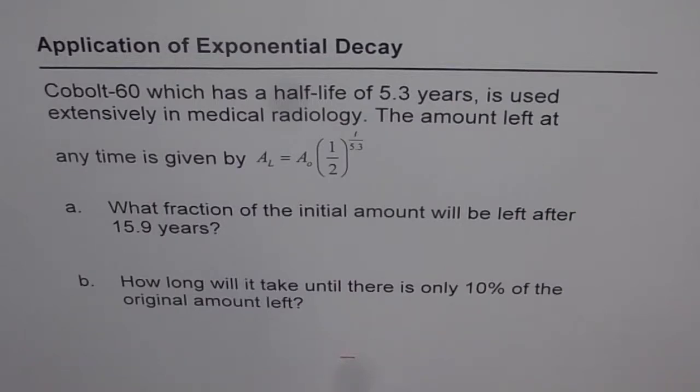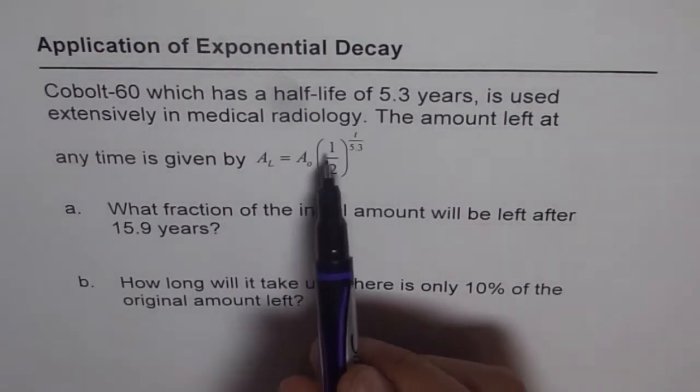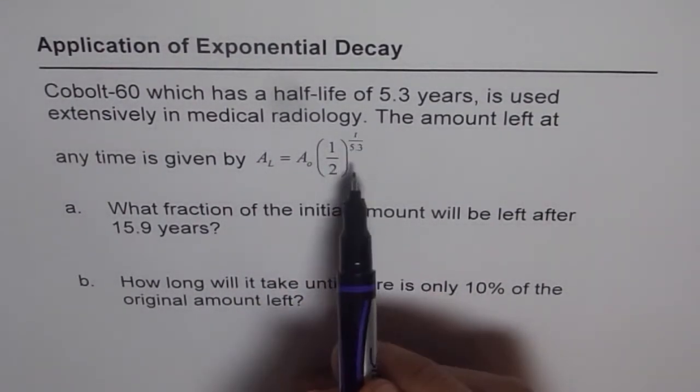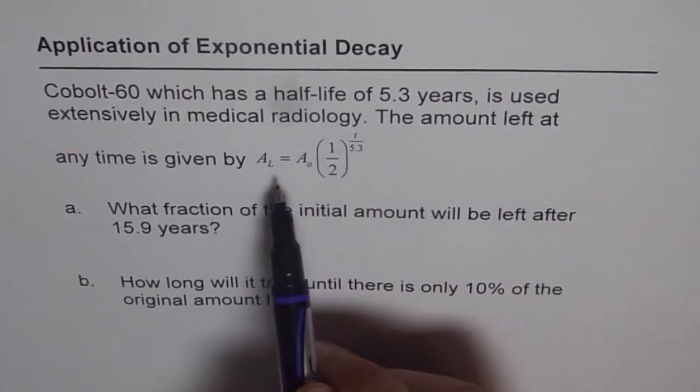The amount left at any time is given by A_L = A_0 × (1/2)^(T/5.3), where A_0 is the initial amount, T is the time, 5.3 is the half-life of Cobalt-60, and A_L is the amount left.